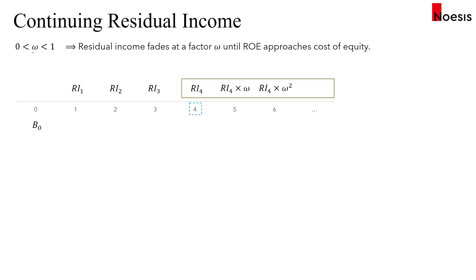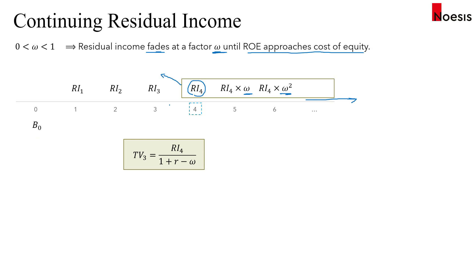If the persistence factor is between zero and one, the residual income fades at a factor of omega until ROE approaches the cost of equity, meaning residual income approaches zero in the long run. The terminal value at year three equals RI4 / (1 + r − omega), summarizing the stream of fading residual incomes.